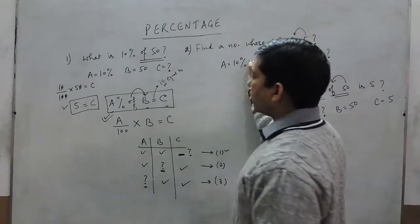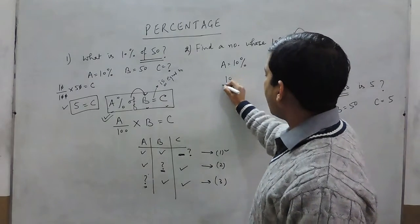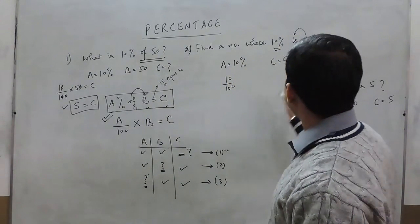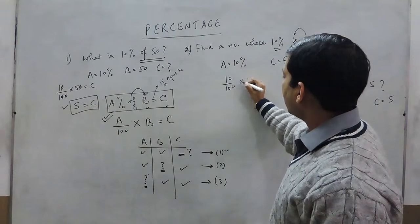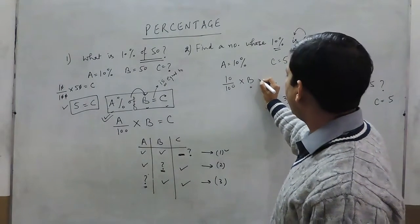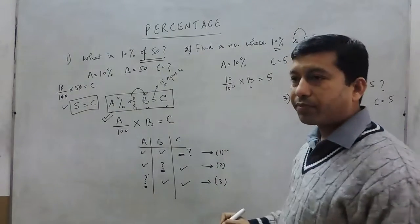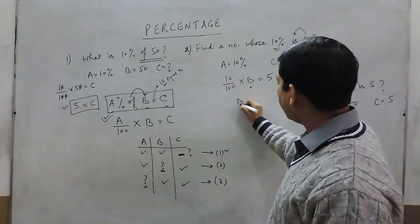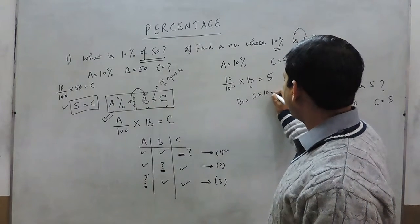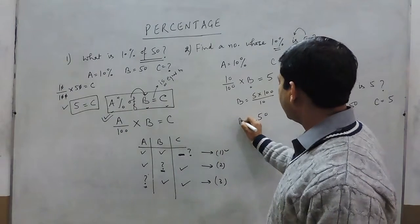For the second question: A percent of B equals C, so 10 upon 100 multiplied by B — the unknown variable — equals 5. Calculating, B equals 5 into 100 upon 10, and the value of B comes out to be 50.